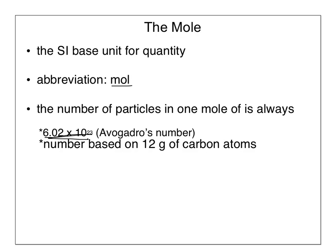This is called Avogadro's number, and was named in honor of him. So if you have a mole of carbon or a mole of carbon dioxide, you would have 6.02 times 10 to the 23rd particles in each, whether it be atoms or molecules. This number is experimentally determined, and it is based on 12 grams of carbon atoms.